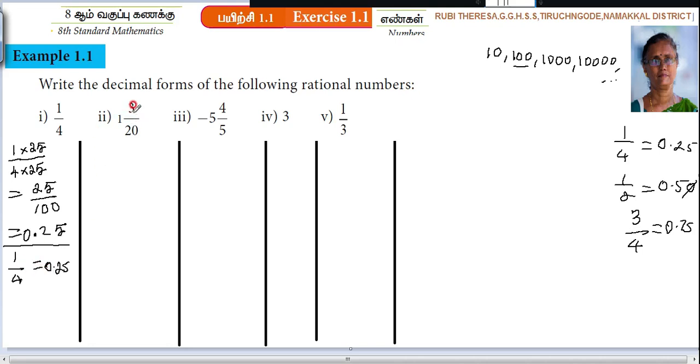Next one, 1 and 3 by 20. What is the name of this fraction? Mixed fraction. You have to convert this into improper fraction. 1 and 3 by 20 equal to. First, you have to multiply these two. 1 into 20 plus 3 divided by 20. 1 times 20 is 20. 20 plus 3 divided by 20 equal to what? 23 divided by 20.